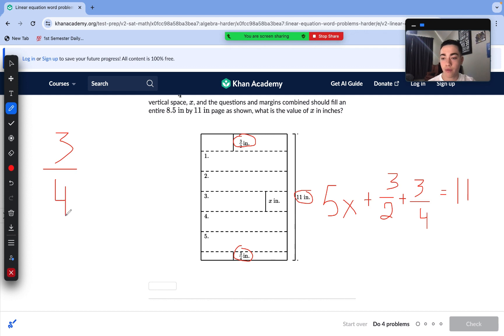We have three-fourths plus six-fourths, multiplying this fraction right here by two for both the numerator and denominator. Now, we combine. We have nine-fourths here. Now, we have 5x plus nine-fourths equals 11. To isolate our x, we are going to subtract nine-fourths on each side.